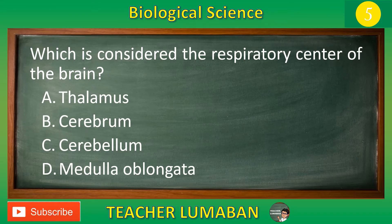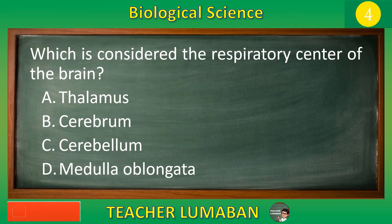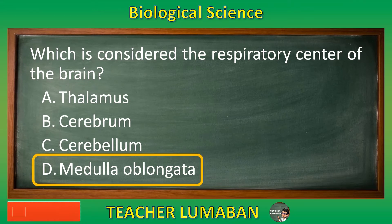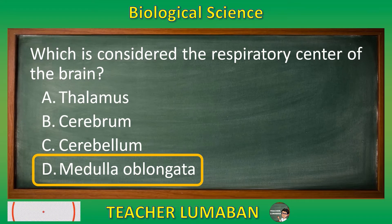5, 4, 3, 2, 1. The correct answer is Letter D: Medulla oblongata. The medulla oblongata is considered the respiratory center of the brain.